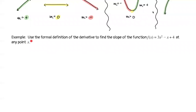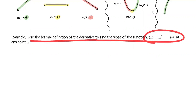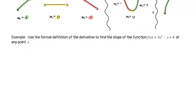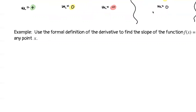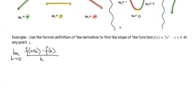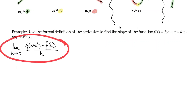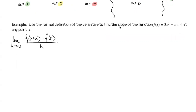The directions will look something like this: use the formal definition of the derivative to find the slope of the function at any point X. The first thing you write down is LIM. Underneath that, write H with an arrow to zero. Next to this, write F of X plus H in parentheses, minus F of X, all over H. This whole equation is the formal definition of the derivative.